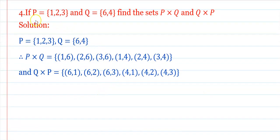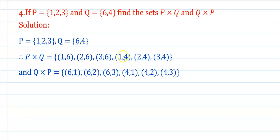Question 3: If P = {1,2,3} and Q = {6,4}, find P × Q and Q × P. P × Q = {(1,6),(1,4),(2,6),(2,4),(3,6),(3,4)} — total 3×2 = 6 ordered pairs. Q × P = {(6,1),(6,2),(6,3),(4,1),(4,2),(4,3)} — total 2×3 = 6 ordered pairs.